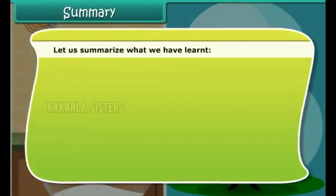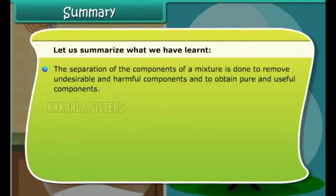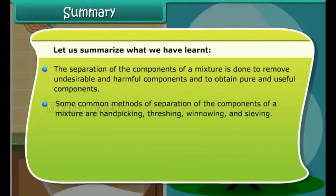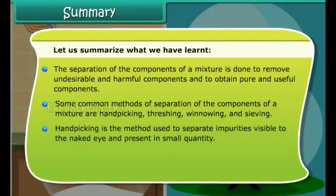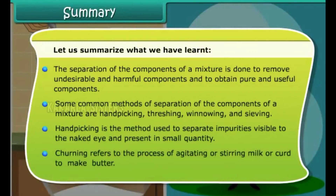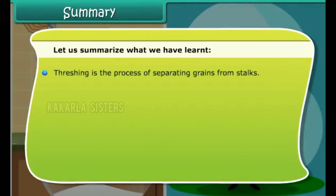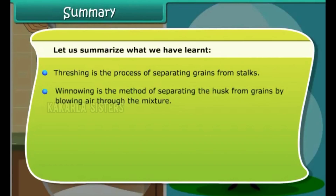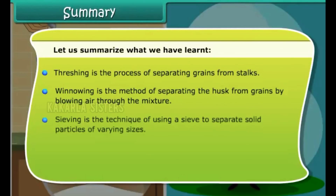Let us summarize what we have learnt. The separation of the components of a mixture is done to remove undesirable and harmful components and to obtain pure and useful components. Some common methods of separation are hand-picking, threshing, winnowing and sieving. Hand-picking is used to separate impurities visible to the naked eye and present in small quantity. Churning refers to agitating or stirring milk or curd to make butter. Threshing is the process of separating grains from stalks. Winnowing is the method of separating husk from grains by allowing air through the mixture. Sieving is the technique of using a sieve to separate solid particles of varying sizes.